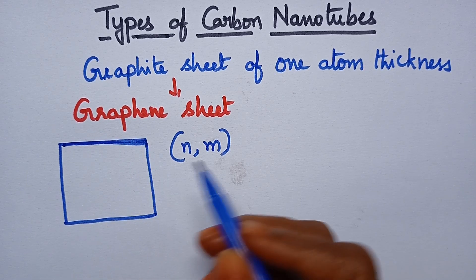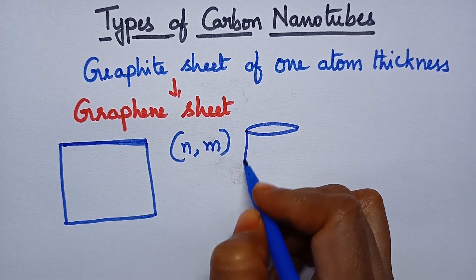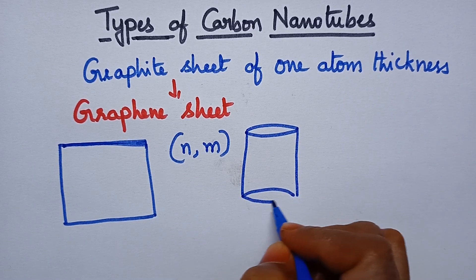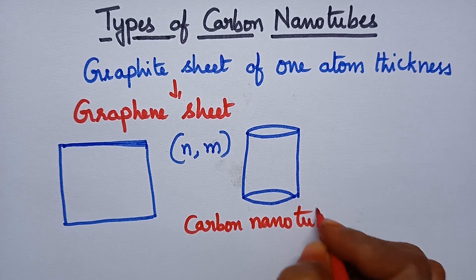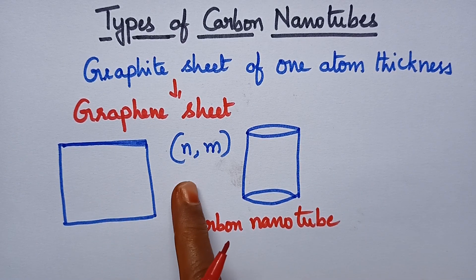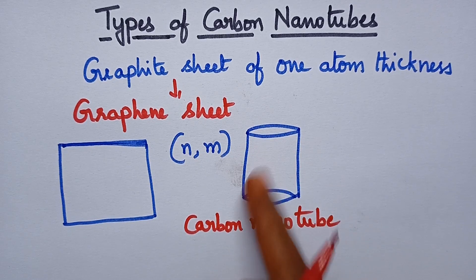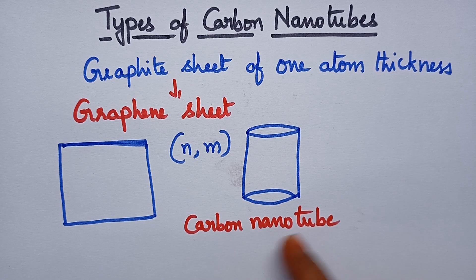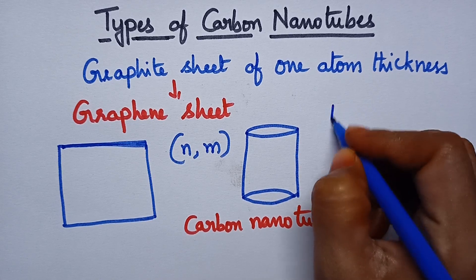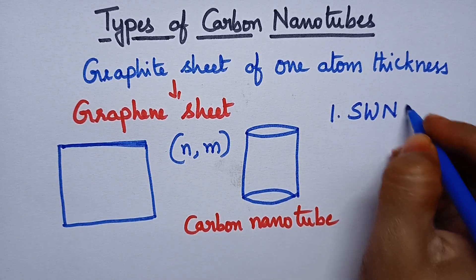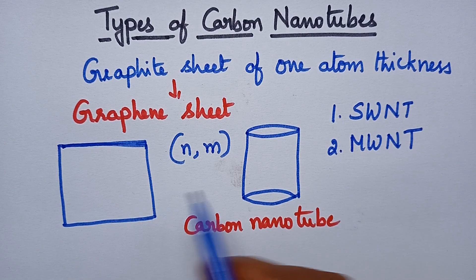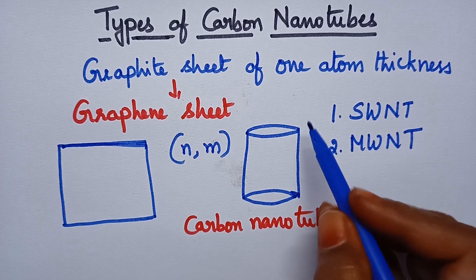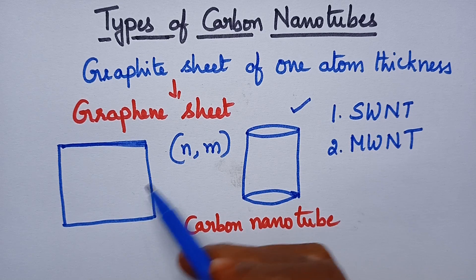Whenever the graphene sheet is rolled, it results in the formation of a tube-like structure and these structures are called carbon nanotubes. Carbon nanotubes can be classified into two categories, namely single-walled carbon nanotubes and multi-walled carbon nanotubes.